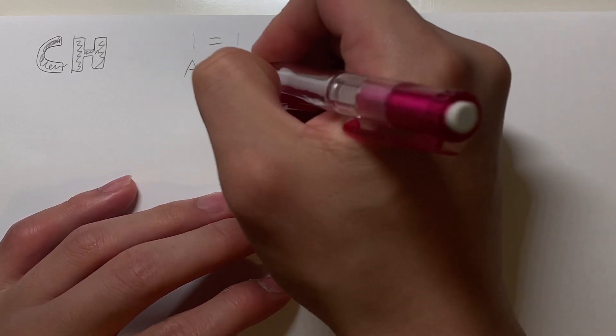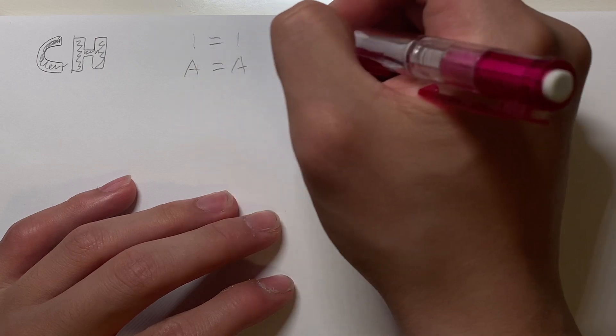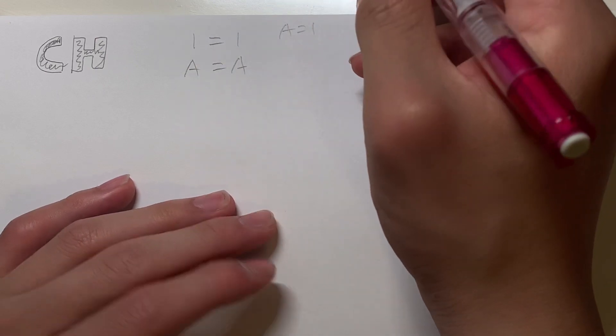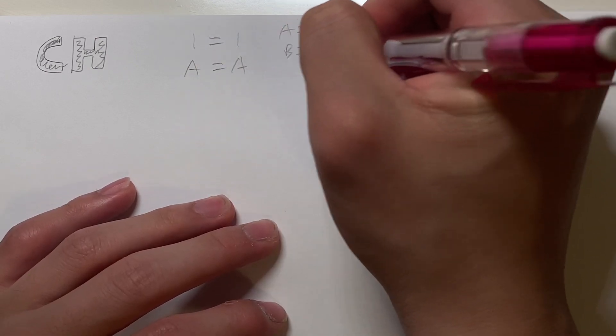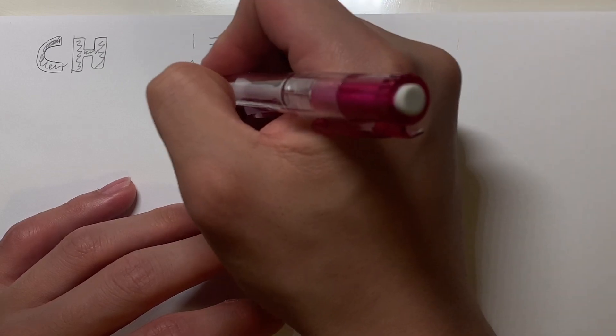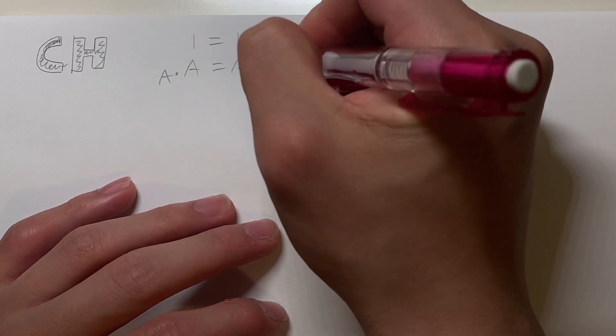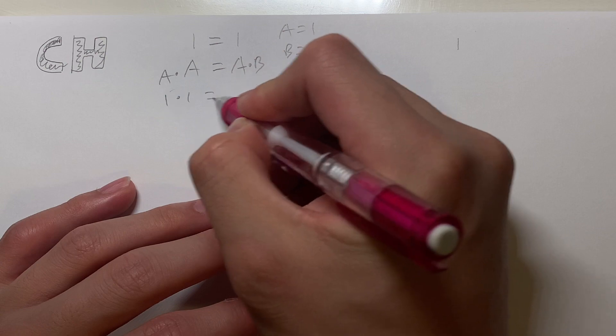So I'm just going to say A is equal to A, because 1 is equal to 1, and A is equal to 1. Then I'm going to assign B equal to 1 as well. And you can agree that A times A is the same as A times B. 1 times 1 is equal to 1 times 1, right?